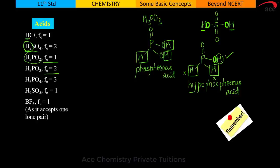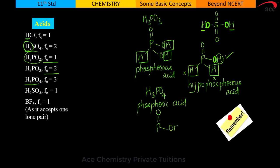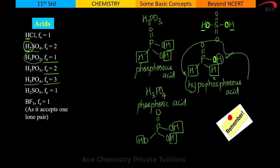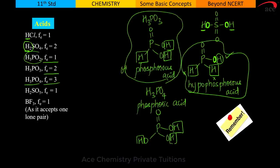For H₃PO₃ (phosphorous acid, also called orthophosphorous acid), drawing the structure gives P=O, two OH groups, and one H directly on P. Only 2 hydrogens are attached to oxygen, so n-factor is 2. For H₃PO₄ (phosphoric acid, also called orthophosphoric acid), all 3 hydrogens are attached to electronegative oxygen, so n-factor is 3.